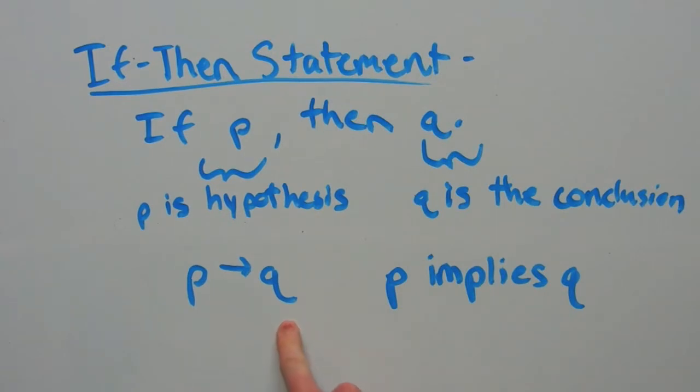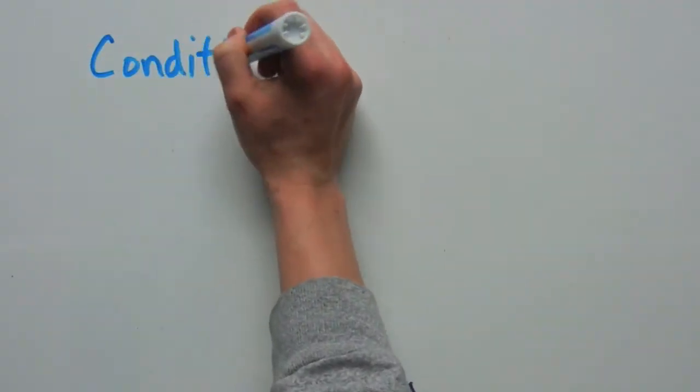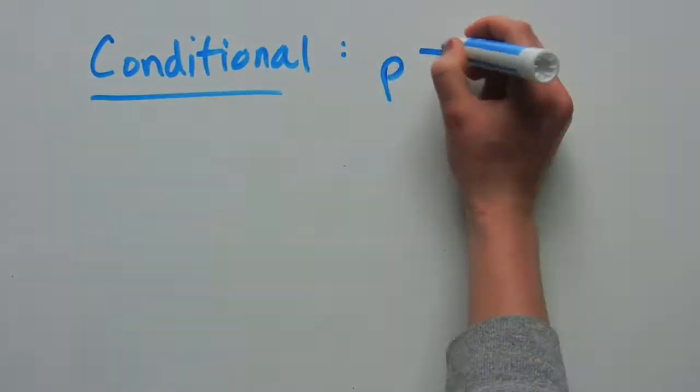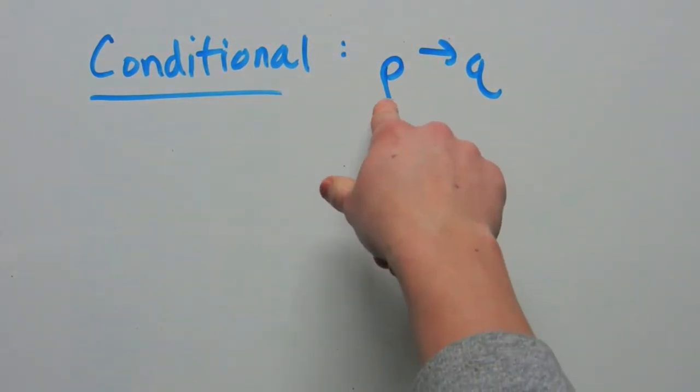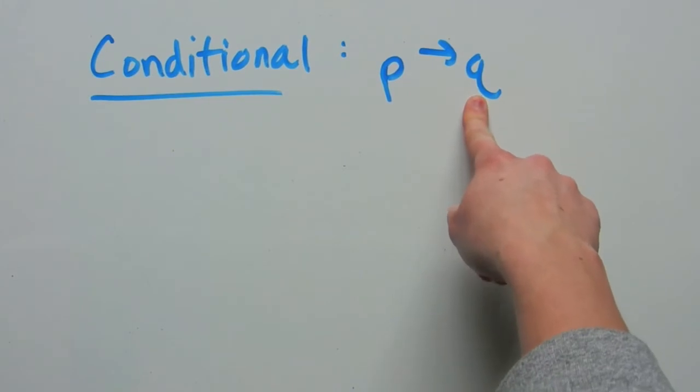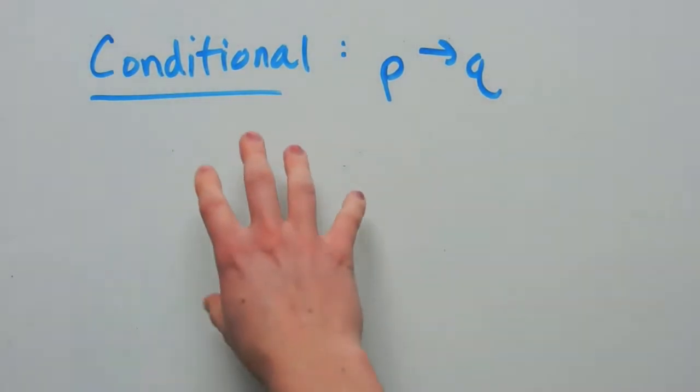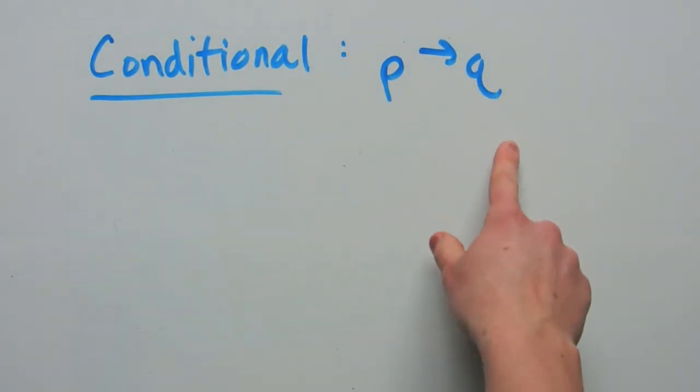This form of an if-then statement is known as the conditional. A conditional is, given this hypothesis P, we're implying the conclusion Q. So an if-then statement in the form of a conditional is P implies Q.